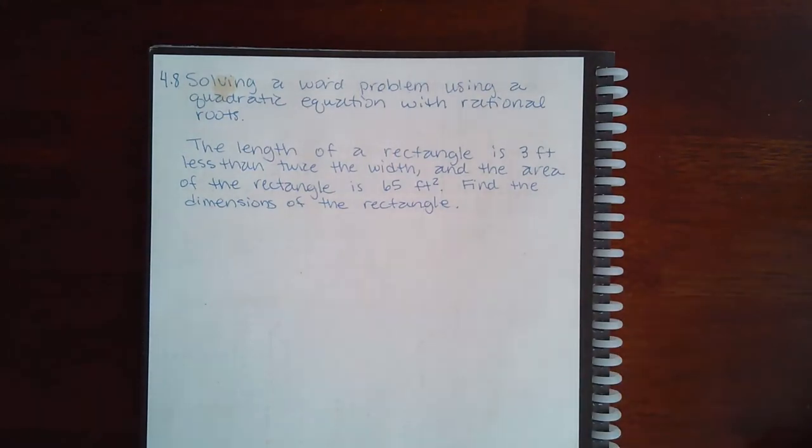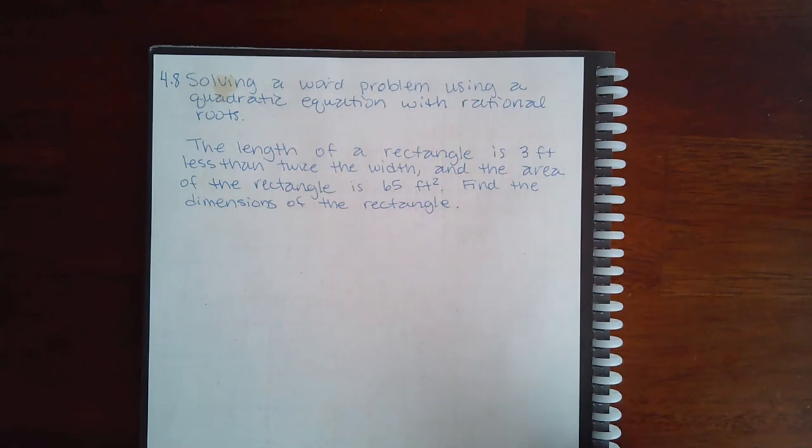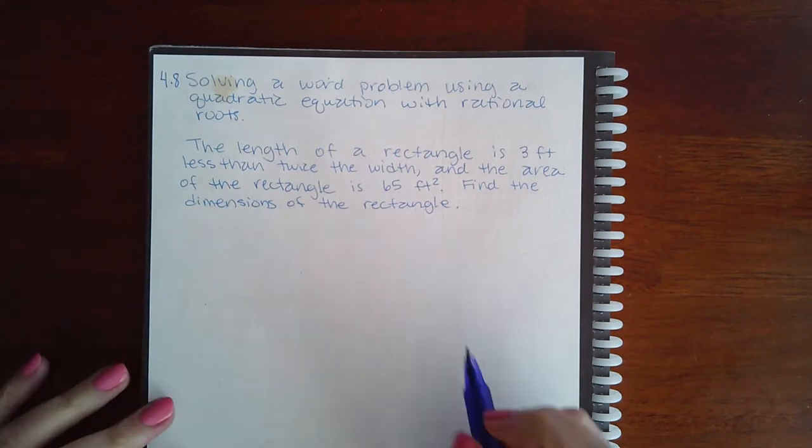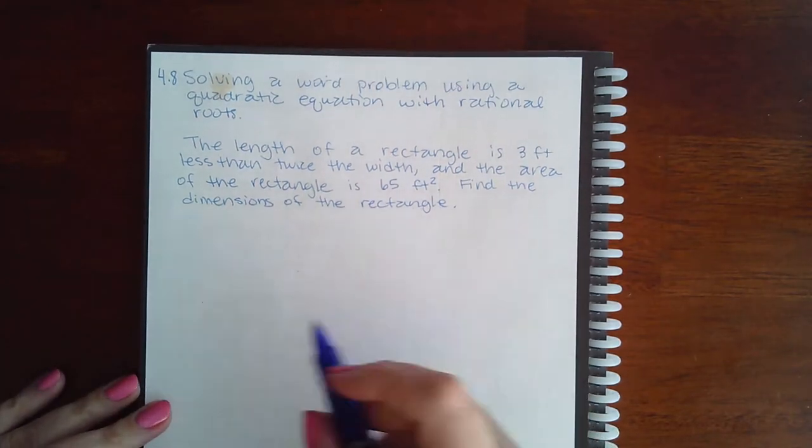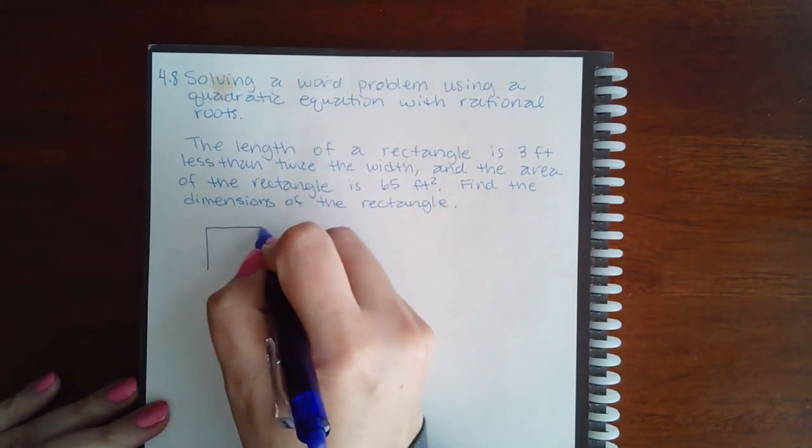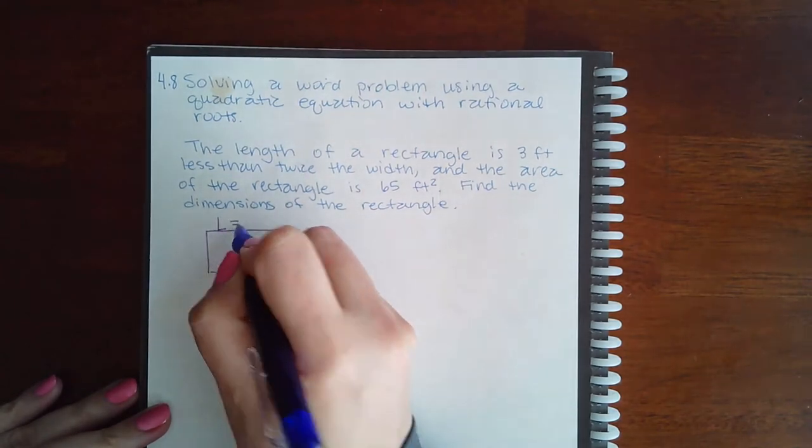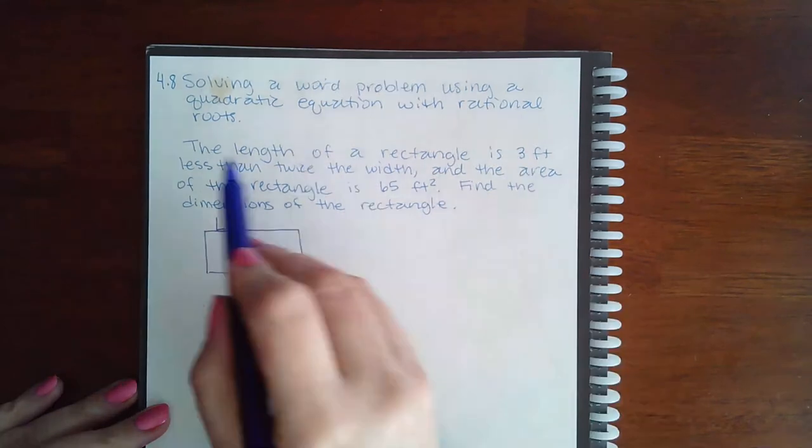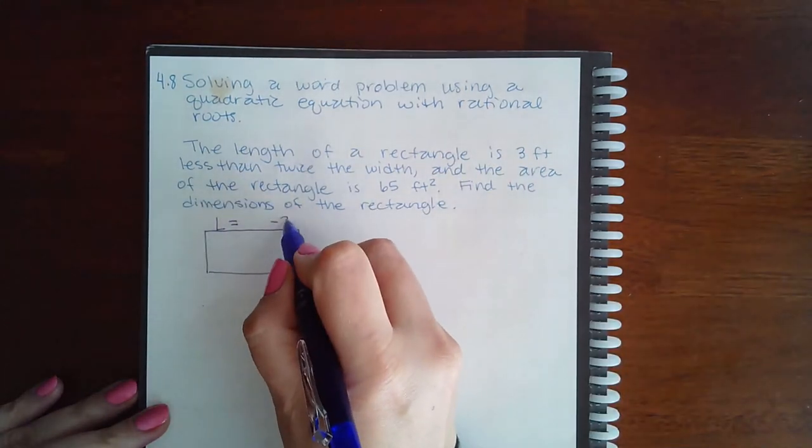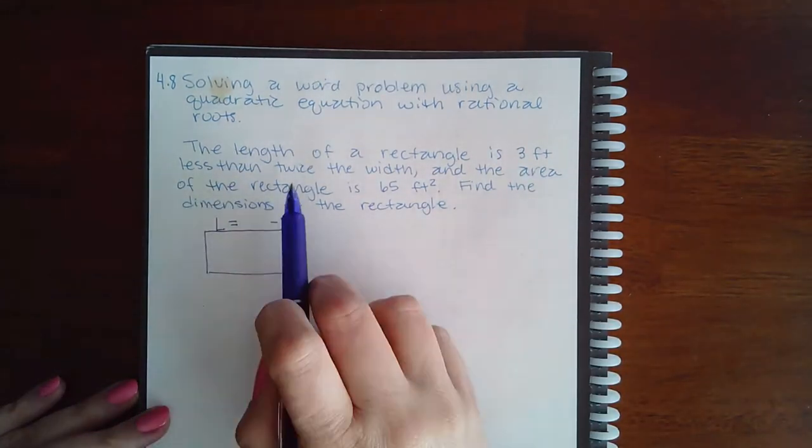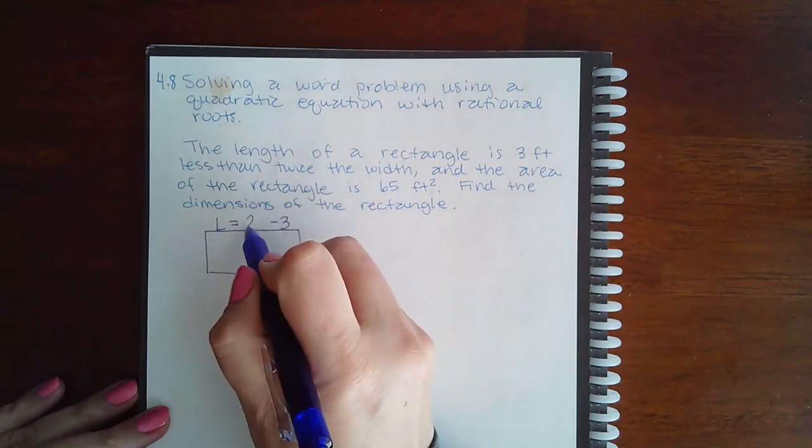Here we have 4.8 solving a word problem using a quadratic equation with rational roots. The length of a rectangle is three feet less than twice the width, so let me draw a rectangle real quick. That means the length is three feet less, so I'm gonna minus three from twice the width.